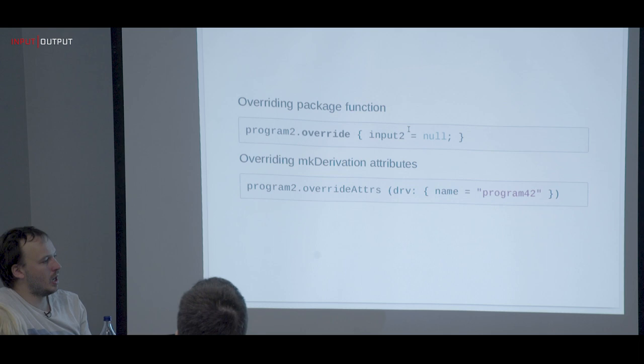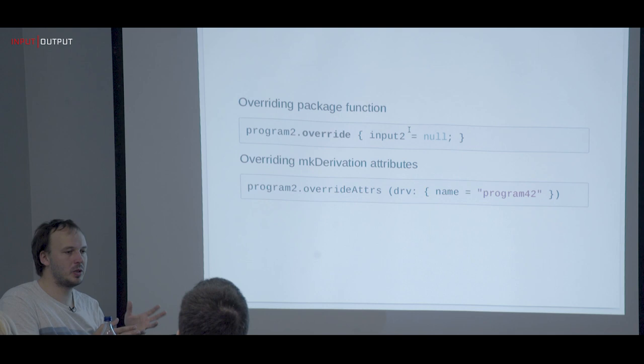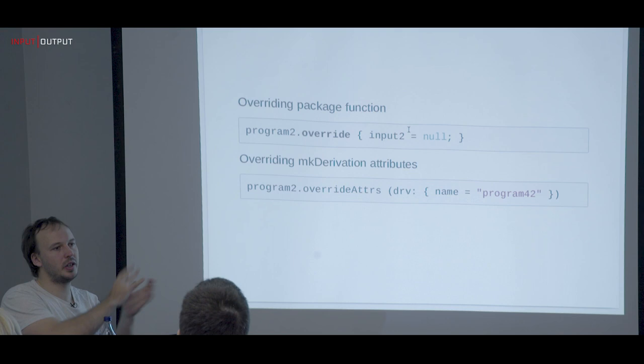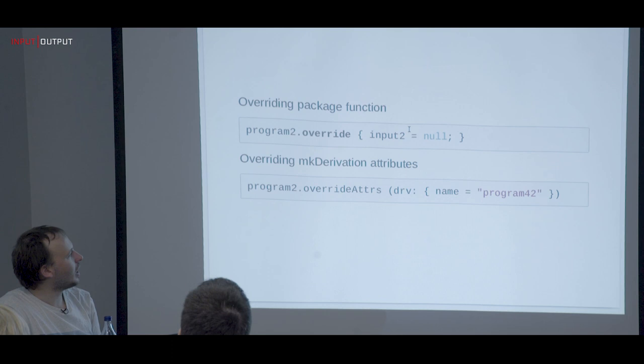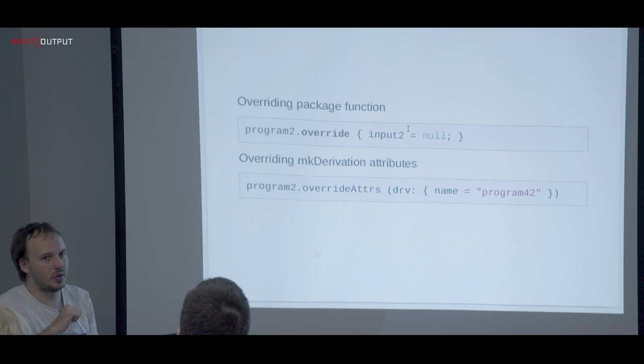You can use this overriding mechanism to build different sets. For example, we wanted to batch-benchmark software and did a huge matrix of different kernels and QEMU versions — basically by just overriding — which is something you can't really do in Docker.